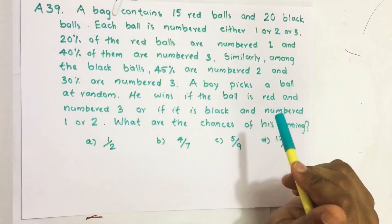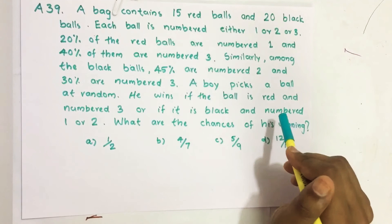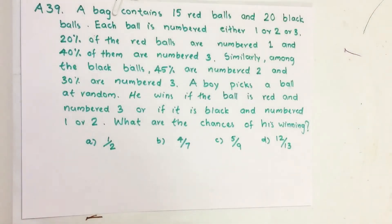A boy picks a ball at random. He wins if the ball is red and numbered 3, or if it is black and numbered 1 or 2. What are the chances of his winning?